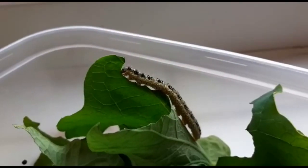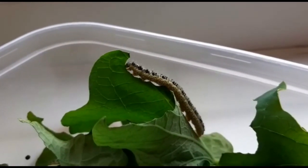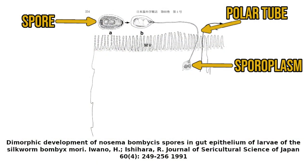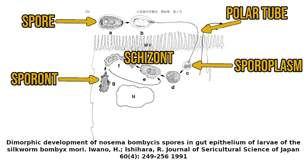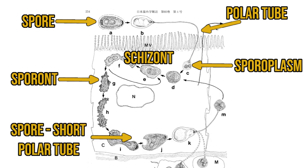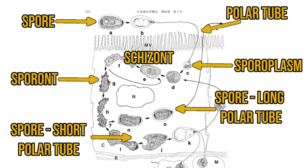The parasite is passed on to new hosts via ingestion of spores on contaminated food. Once activated in the intestine, the spore sends out a polar tube that implants a structure called the sporoplasm within the host enterocyte. The sporoplasm divides to produce two schizonts, with further divisions producing sporonts. Some sporonts develop into spores with short polar tubes that extrude through the basement membrane to underlying muscle cells and haemocytes. The remaining sporonts develop into spores with long polar tubes, which are released into the intestinal lumen and can contaminate the environment until ingested by a new host. This ability to cross the intestinal epithelial basement membrane can lead to widespread infection, as seen in this case.